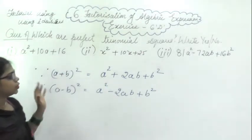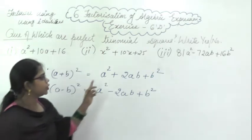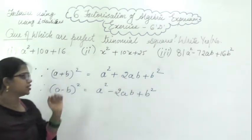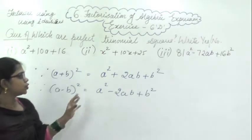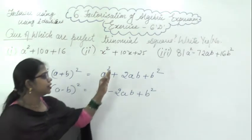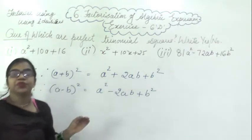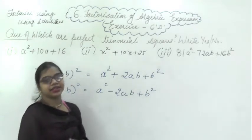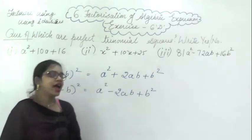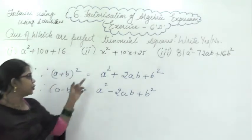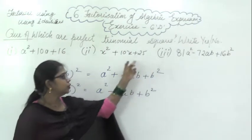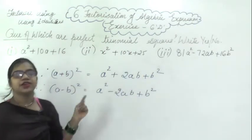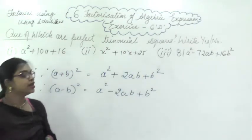Means what the question will be given — the question will be given in this form and you have to convert it in this form. So you have to check what will be the middle term, what is the first term, what will be the third term. Means exactly you have to find the value of A and B and then you have to convert into this form — means you have to find out the factors.